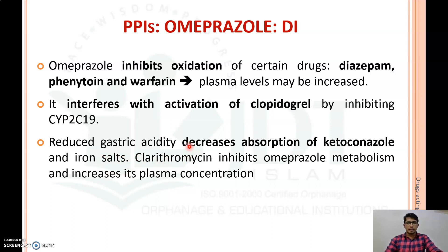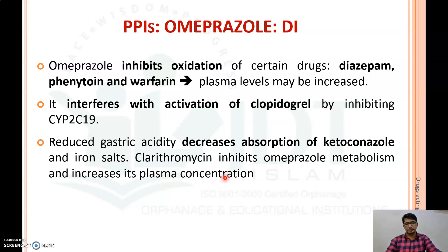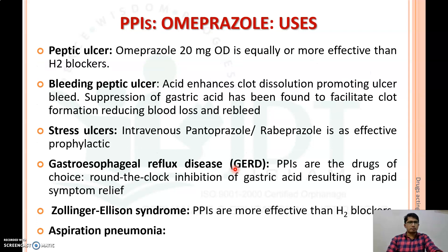Decreased absorption of ketoconazole is a common side effect for all drugs that decrease gastric acid secretion, because ketoconazole is better absorbed at acidic pH. Drugs that decrease gastric acid increase gastric pH, thereby decreasing ketoconazole absorption. Also, clarithromycin will inhibit omeprazole metabolism and increase its plasma concentration. Those are some important drug interactions of omeprazole.